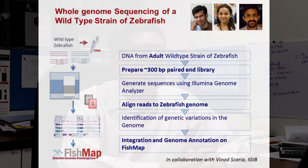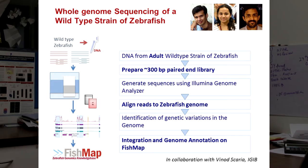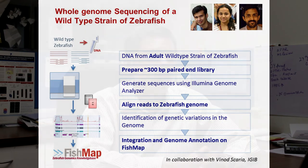Since zebrafish are maintained as outbred populations with genetic diversity conserved at both individual and population levels, they provide a tremendous opportunity to study gene expressivity, penetrance, and phenotypic variability in human monogenic diseases. This led us to sequence the whole genome of a wild-type strain of zebrafish, initiated by graduate students Ashok and Ramya along with Vinod's lab. By sequencing at very high coverage, we identified over 5 million single nucleotide variations and over 1.7 million insertion-deletions in a single wild animal.